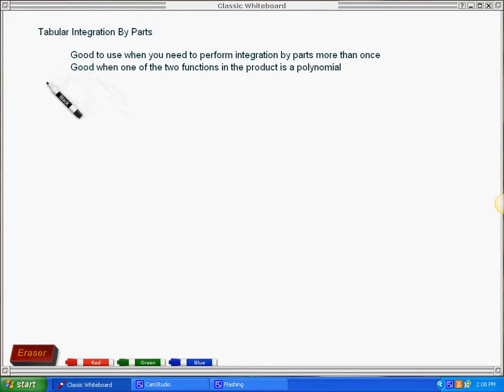If we consider an example like the integral of x to the third times cosine x, I hope that you all agree with me that this is a case where we would have to use integration by parts. But how many times would we have to perform integration by parts?